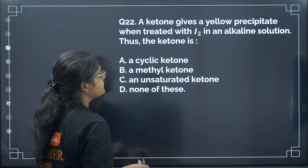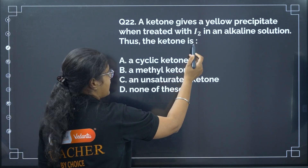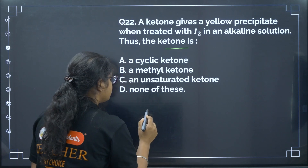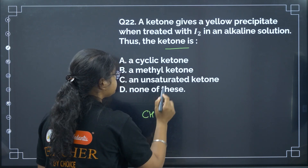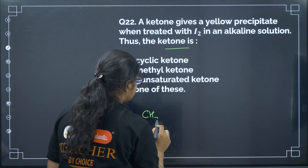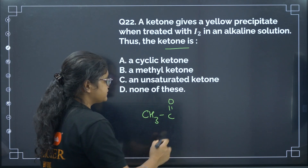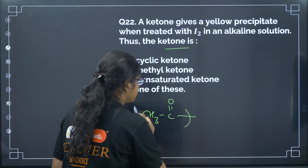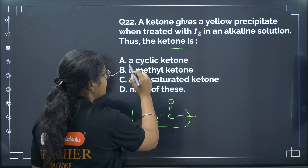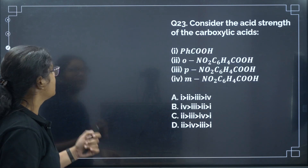Next: a ketone gives a yellow precipitate when treated with I2 in alkaline conditions. This means it undergoes the iodoform reaction, so the CH3-CO- group must be present. This type of compound is called a methyl ketone. So the ketone must contain a methyl group.